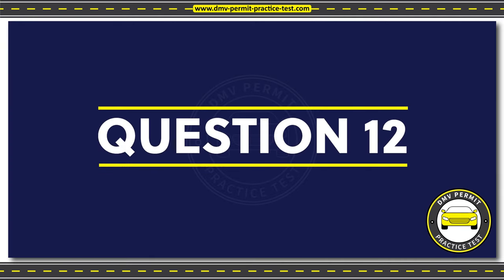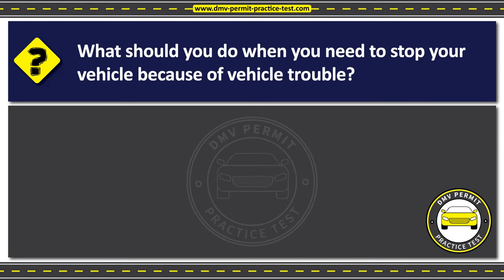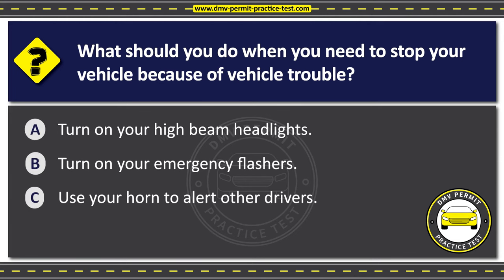Question 12. What should you do when you need to stop your vehicle because of vehicle trouble? Option A: Turn on your high-beam headlights. Option B: Turn on your emergency flashers. Option C: Use your horn to alert other drivers. The correct answer is Option B: Turn on your emergency flashers. Turning on your emergency flashers when you need to stop because of vehicle trouble will make your vehicle more visible to other drivers and help prevent collision.